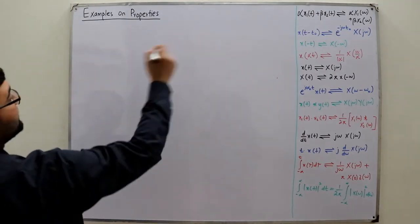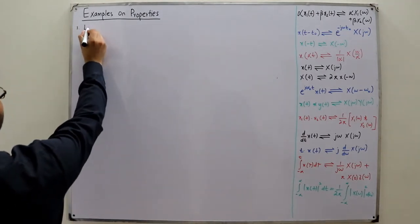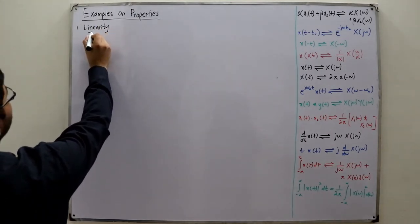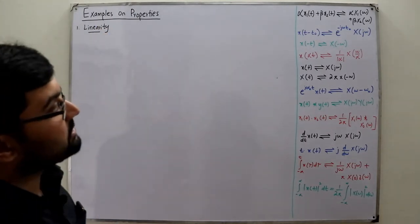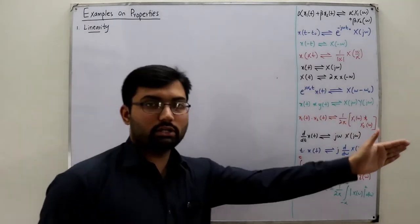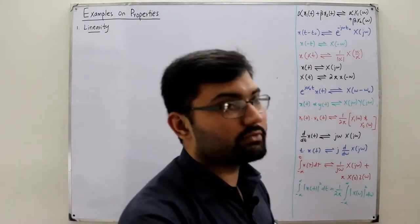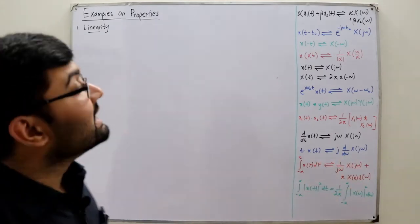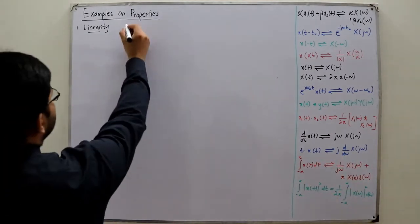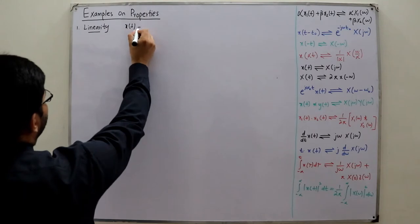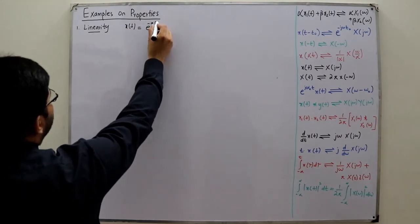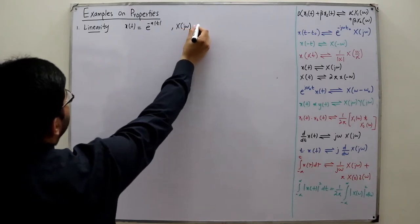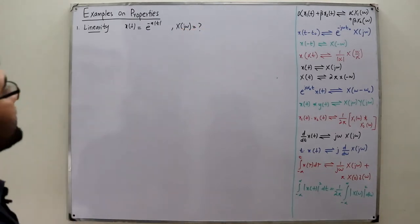The first property is linearity. If a signal in the time domain is a linear combination of two or more signals, the corresponding Fourier transform would be the linear combination of the individual Fourier transforms. Example: if my signal x(t) is e^(-a|t|) and its corresponding Fourier transform X(jω) is unknown, what do you do?